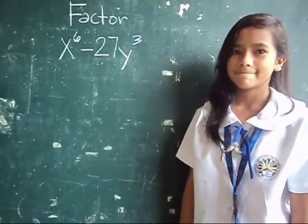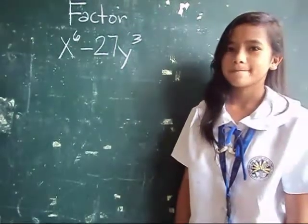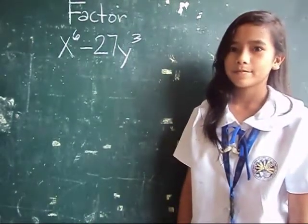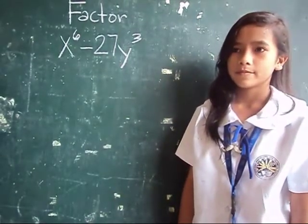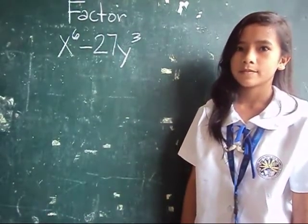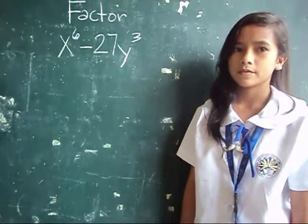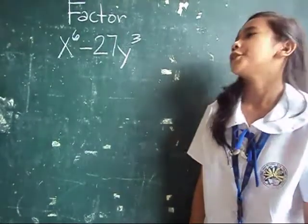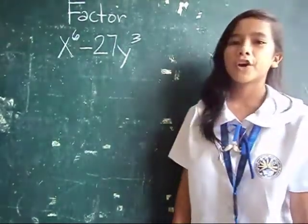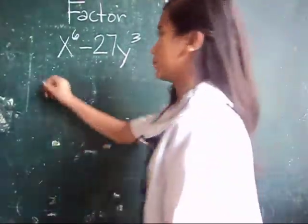Factor x to the power of 6 minus 27y cubed. We write this in the form difference of two cubes.